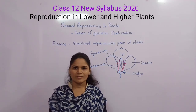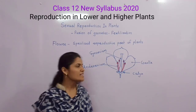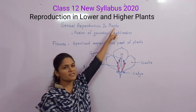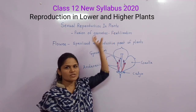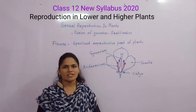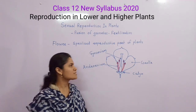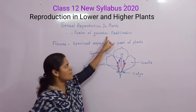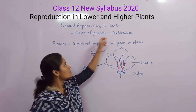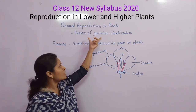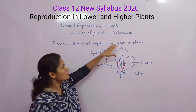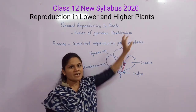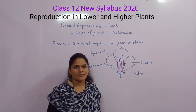Hello students, today's topic is sexual reproduction in plants. Sexual reproduction in plants takes place by fusion of gametes. Fusion of gametes is known as fertilization.